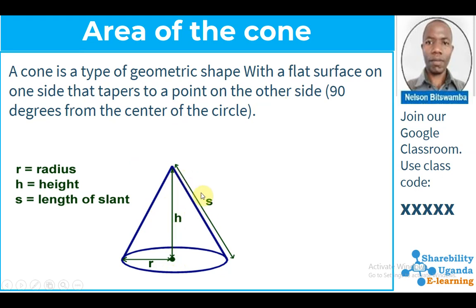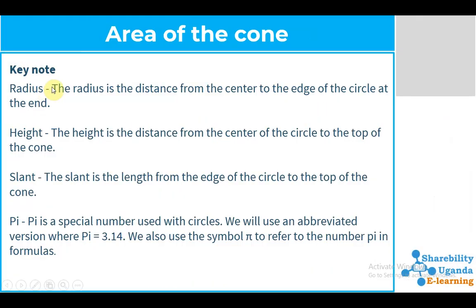The cone itself has what you call a slant or a slope. The cone has a height and it also has a base, and it forms a circular shape which is a circle. When dealing with a cone we should be aware of: the radius, which is the distance from the center to the edge of the circle; the height, which is the distance from the center of the circle to the top of the cone; the slant or slope, which is the length of the edge from the base to the top; and pi, which is approximately 3.14.